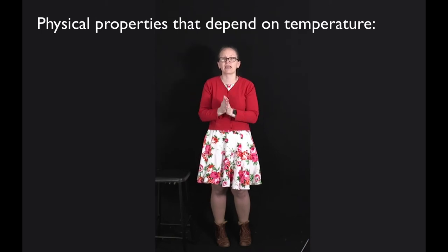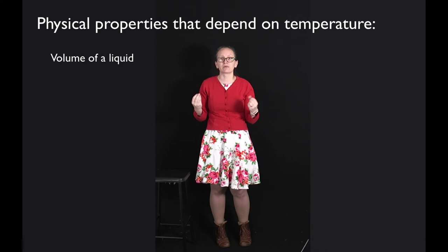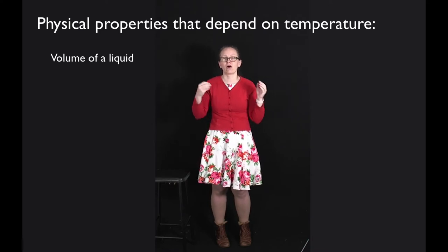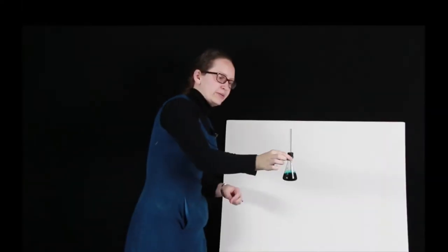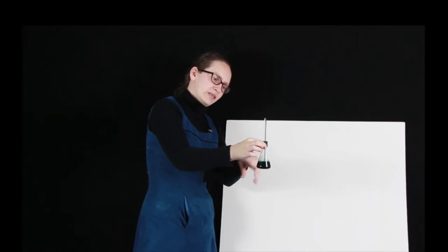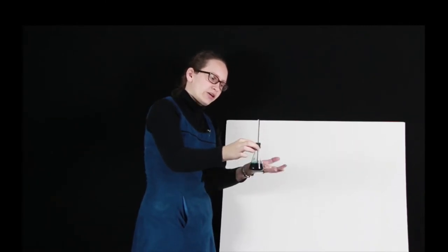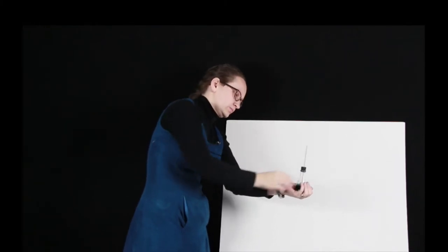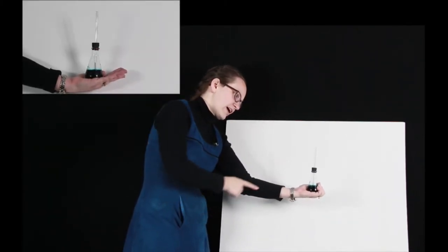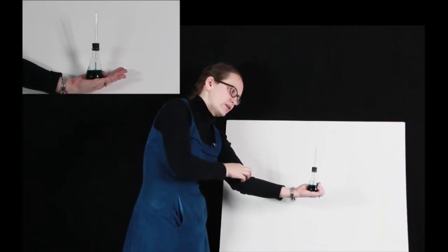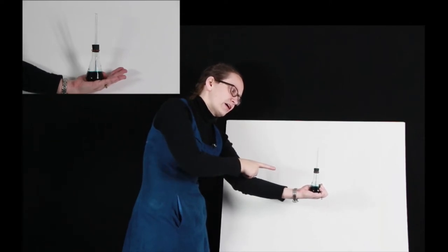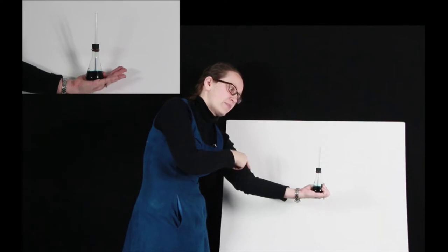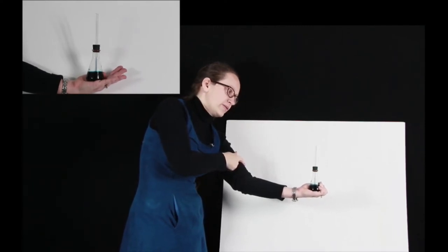There are quite a number of physical properties that change with temperature. One example is the volume of a liquid. What I've got here is a flask with some water with food dye in it and a capillary tube. I'm going to hold onto it with my warm hand. As I hold it, I'm transferring heat from my hand to the liquid, causing the temperature of the liquid to rise, and this is causing the volume of the liquid to increase. You can see the liquid rising up through the capillary tube as its volume increases.